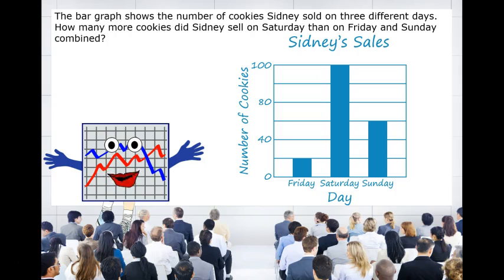That means Friday, Sydney sold 20 cookies. Saturday, she sold 100 cookies. And Sunday, she sold 60. So to figure out how many cookies Sydney sold on Friday and Sunday combined, it would be 20 plus 60, which equals 80.